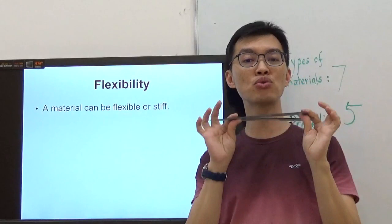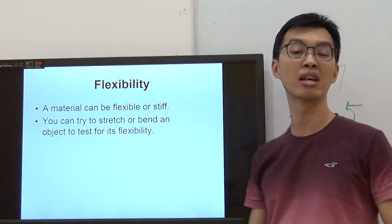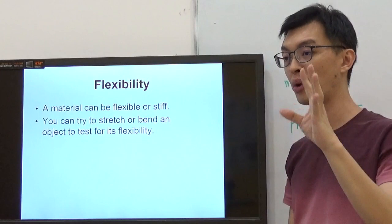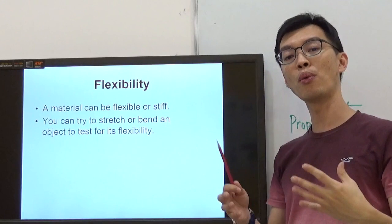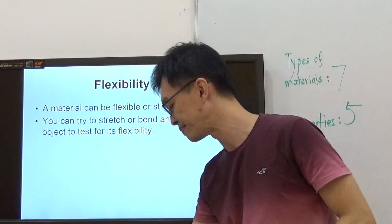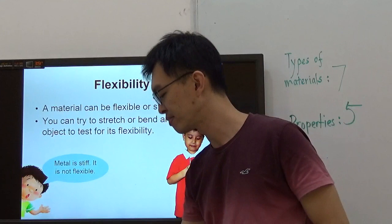You can try to stretch or bend an object to test for its flexibility. I just showed you I bent it. If you see the word 'bend' in a question, it must mean flexibility. They are testing you on whether something is flexible or stiff. Metal is stiff.